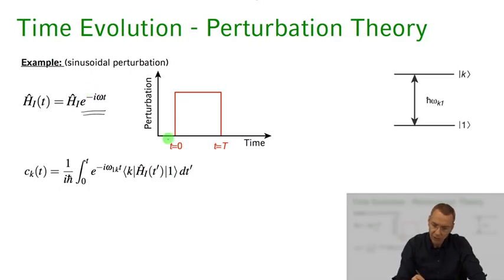So we consider the following situation that the light field goes on at some time t equals 0 is kept at a constant intensity level and then the light field is turned off, the interaction Hamiltonian is turned off at some time t equals capital T.